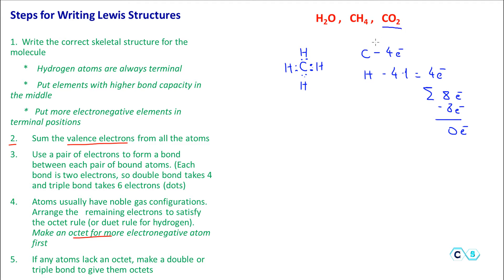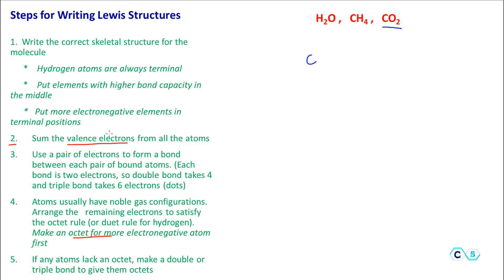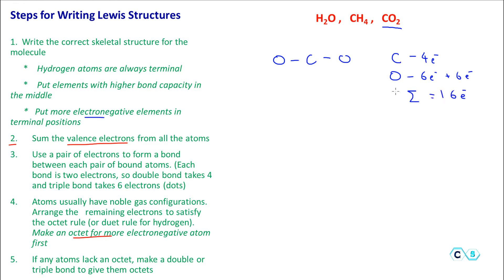Now let's do carbon dioxide. Carbon goes in the middle because oxygen is more electronegative and goes in terminal positions, and also because carbon has higher bond capacity — it needs four bonds to satisfy the octet rule. With the skeletal structure set, we sum the valence electrons: carbon contributes four electrons, and each oxygen contributes six, so two oxygens give twelve. Total: sixteen electrons. Connecting carbon to both oxygens uses four electrons, leaving twelve electrons.